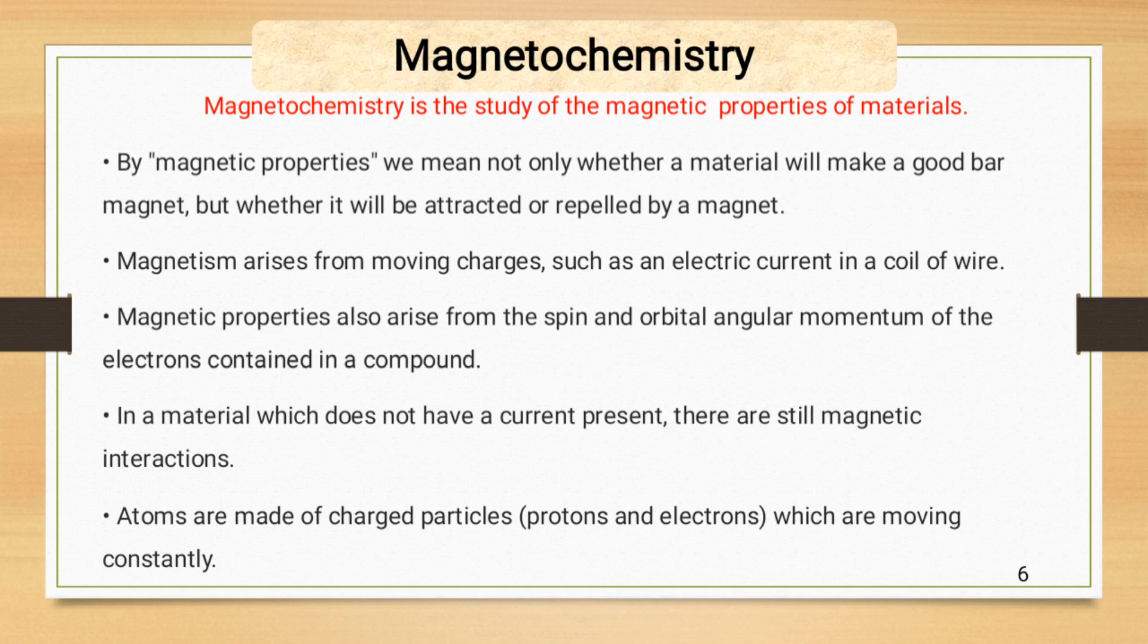In a material which does not have a current present, there are still magnetic interactions, because the atoms that are making that material have electrons and protons in its atoms, which is itself creating a magnetic field around them. Atoms are made up of charged particles, protons and electrons, which are moving constantly and producing such kind of magnetic interactions.